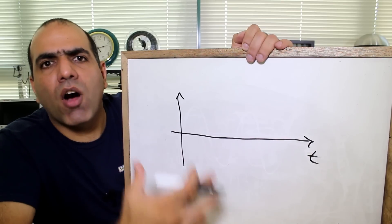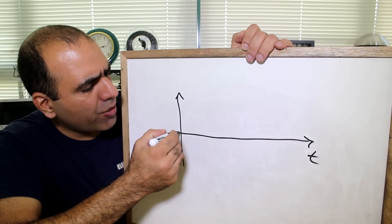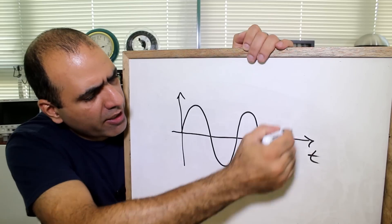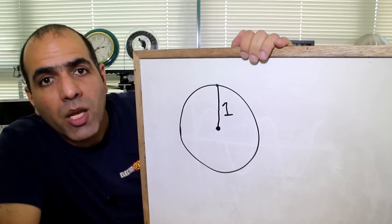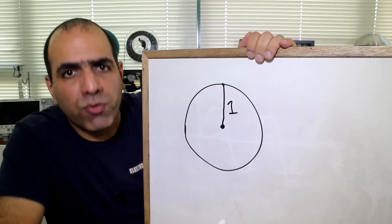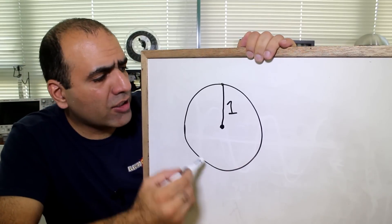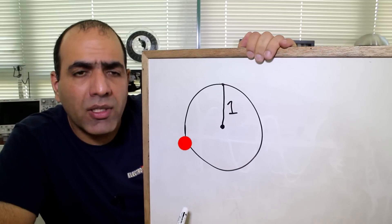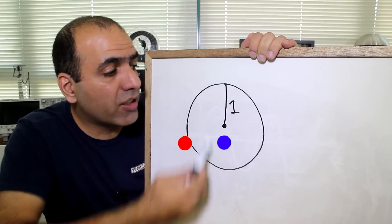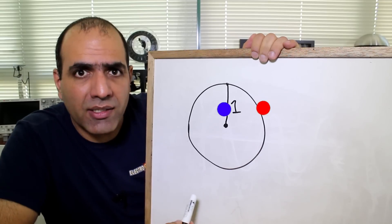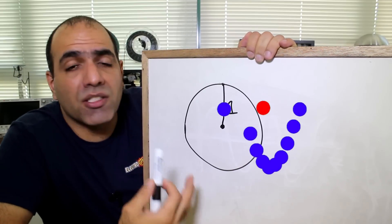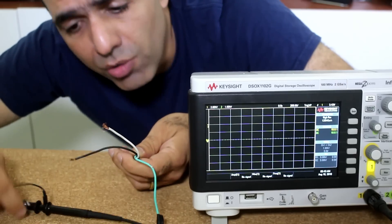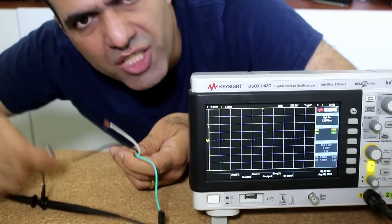The most basic alternating waveform is a sinusoidal waveform or sine wave. Imagine you have a circle with a radius of 1 and a dot moving around its perimeter at a fixed speed. If you look at the shadow of the dot on the vertical axis and plot it in time, you'll have a sine wave with a magnitude of 1. And as you all know, the city voltage is a sine wave.